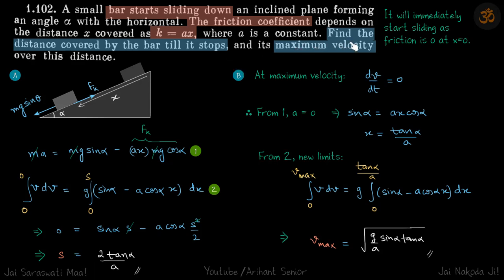Now what is the maximum velocity? At maximum velocity, dv by dt will be zero because that's a maxima for the vt graph. So from the first equation, if we put acceleration as zero...